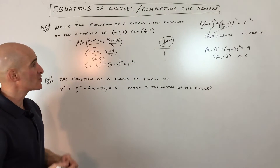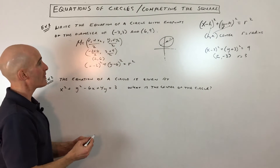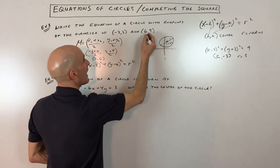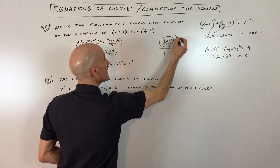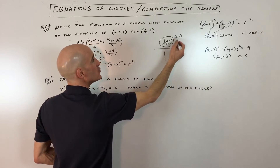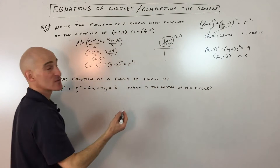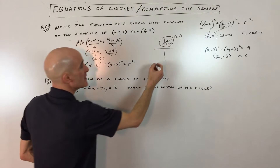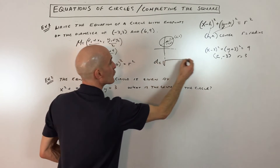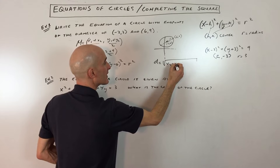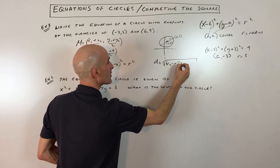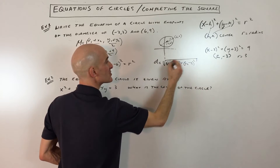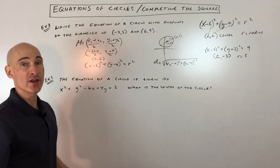To find the radius you can do a couple of things. One option: use the distance formula, since you know the center is at (2, 6) and a point on the circle is (6, 9). The distance formula is the square root of (x2 minus x1) squared plus (y2 minus y1) squared. That gives you the radius, which you then square and put into the equation.